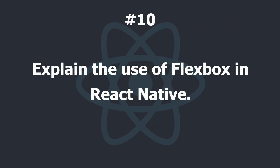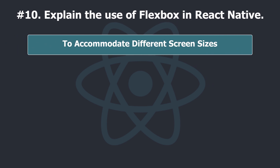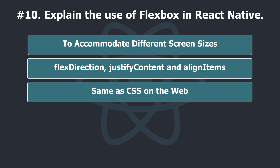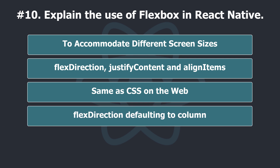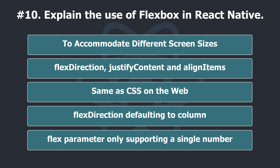Explain the use of Flexbox in React Native. To accommodate different screen sizes, React Native offers Flexbox support. To achieve the desired layout, Flexbox offers three main properties: flex direction, justify content, and align items. Flexbox works the same way in React Native as it does in CSS on the web with a few exceptions. The defaults are different, with flex direction defaulting to column instead of row, and the flex parameter only supporting a single number.